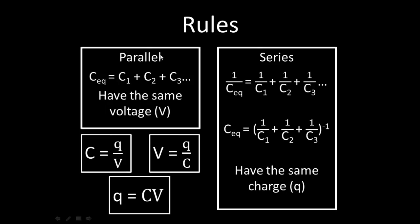For capacitors in parallel, in order to find the equivalent capacitance we can add each capacitor normally: C1 plus C2 plus C3. Capacitors in parallel have the same voltage V across each capacitor. For capacitors in series, we add each capacitor component inversely, and capacitors in series have the same charge Q through each capacitor.